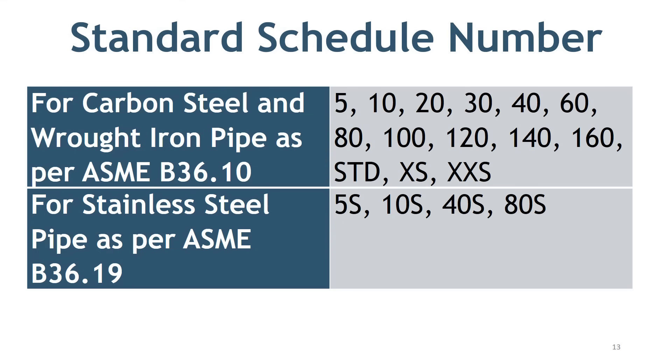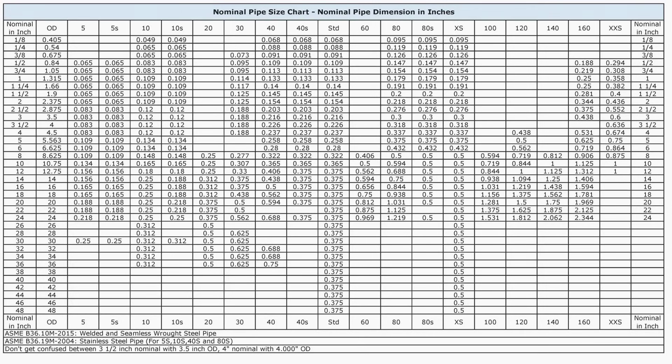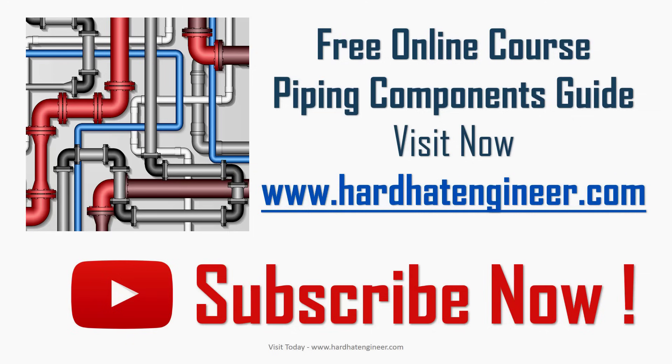Pipe dimension chart can be very handy if you are working in piping field. You can download the latest nominal pipe size chart prepared by me by visiting my website hardhatengineer.com. This chart has dimensions in both mm and inch. Link is given in the description. Don't forget to subscribe my channel. Please like and share my video with your friends. If you want to request a video, write in the comment. See you soon. Goodbye. Take care.